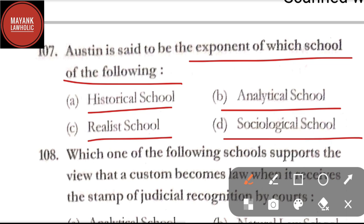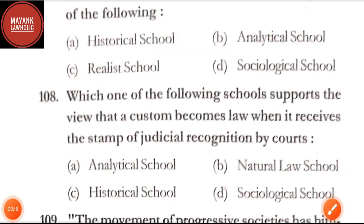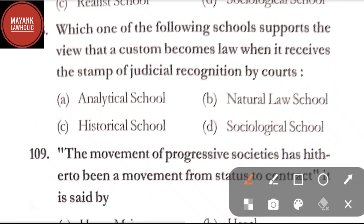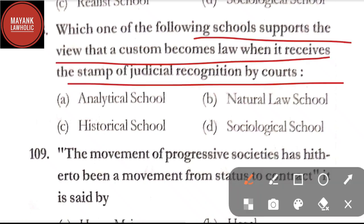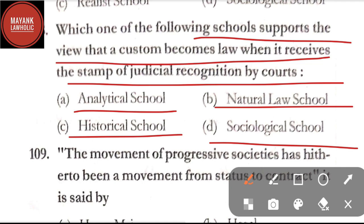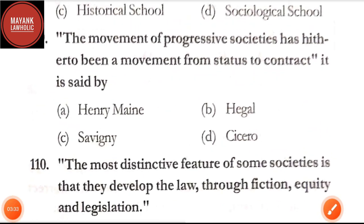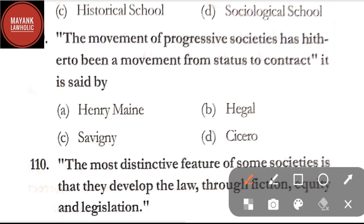Question number 106: which of the following schools gave birth to the concept of human rights — option A: historical school; option B: natural law school; option C: realist school; option D: sociological school. The correct answer is option B, natural law school. Question number 107: Austin is said to be the exponent of which school — option A: historical school; option B: analytical school; option C: realist school; option D: sociological school. The correct answer is option B, analytical school.